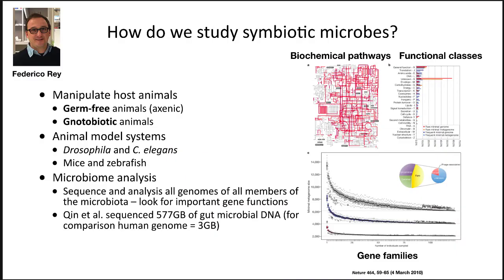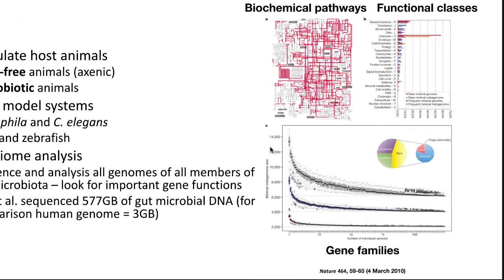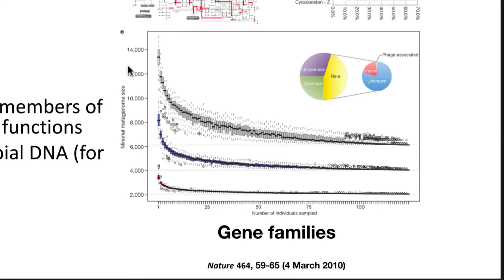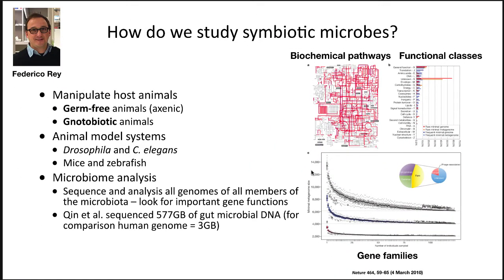How we study symbiotic microbes is pretty similar to how we study any environment. We use the same tools: amplicon sequencing, metagenomics, and metabolomics. As an example, Quinn and coworkers sequenced 577 gigabytes of gut microbial DNA from subjects to discover patterns. We will also use germ-free animals — those without a microbiome — and notobiotic animals — those with a carefully controlled microbiome where every species is known.